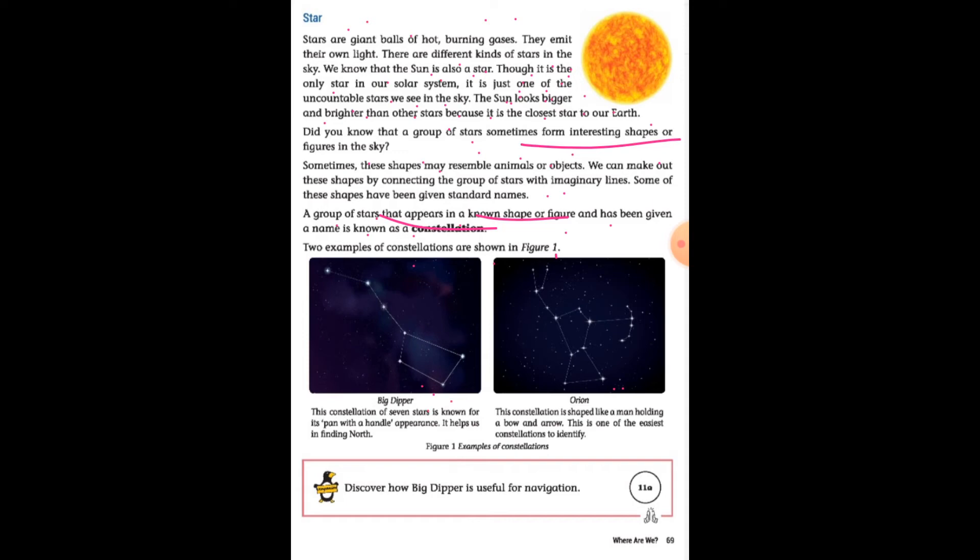This constellation of seven stars is known as pan with the handle. The Big Dipper constellation helps us find the north.